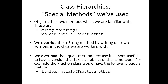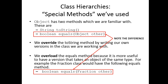We overload the equals method — we could override it, but overloading it is the better choice here. For example, in the fraction class, it makes sense to compare fractions to other fractions. I like to reinforce the idea that it's good practice to override the toString method and overload the equals method. Because the parameters are different, it means it is an overloaded method, not an overridden method.